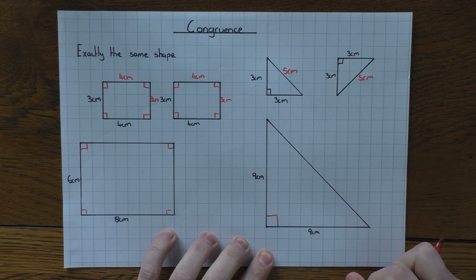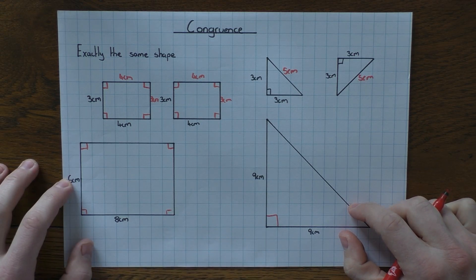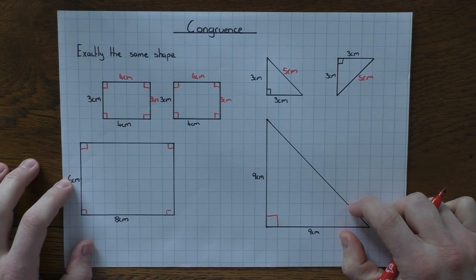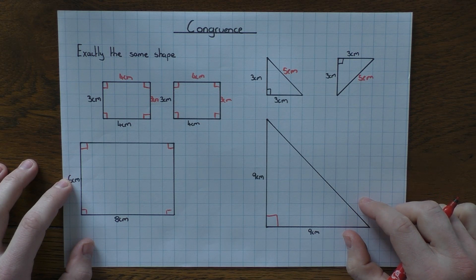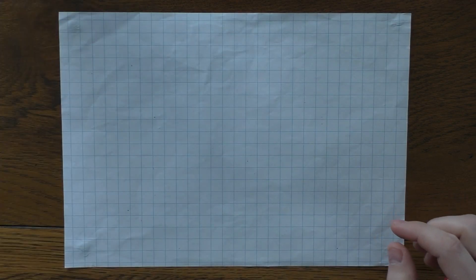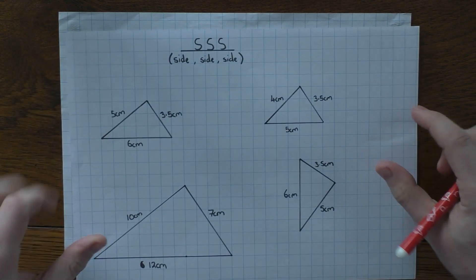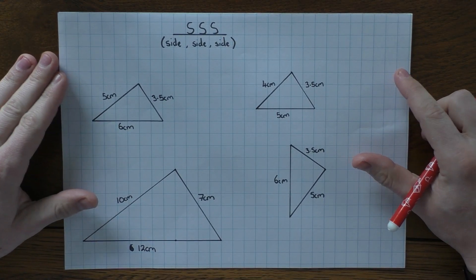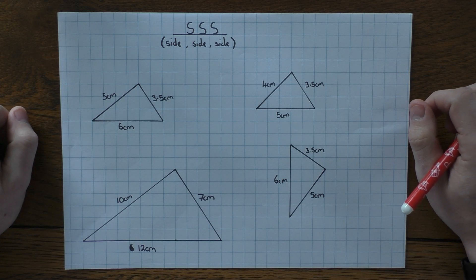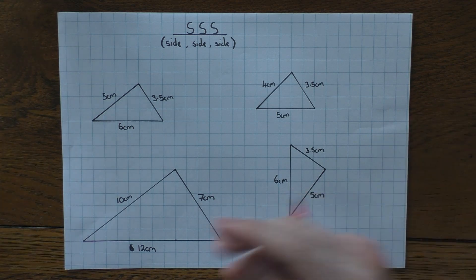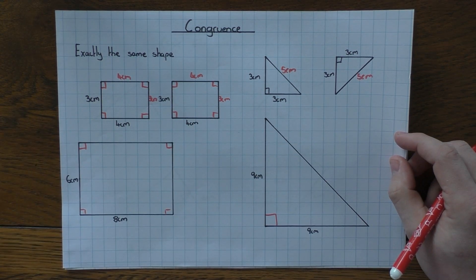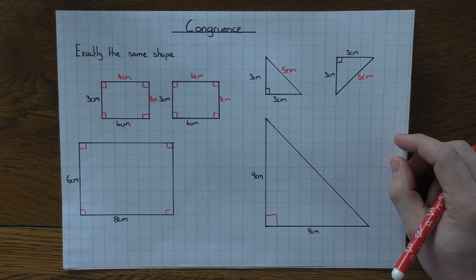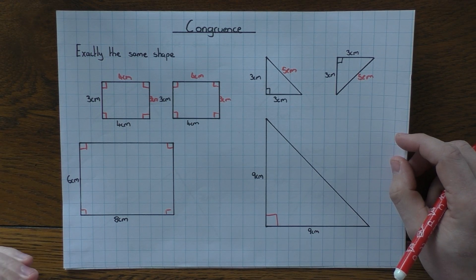That's the difference between congruent shapes and similar shapes. It does get slightly trickier when we look at triangles. There are four rules that will help us prove congruency between triangles. The purpose of these rules is to find the minimum amount of information needed to prove two shapes are congruent — how little information do we need to prove that they are congruent.